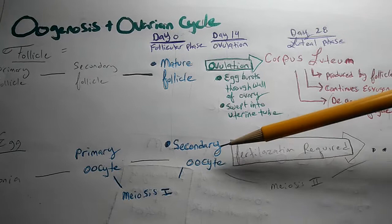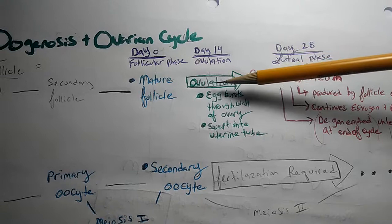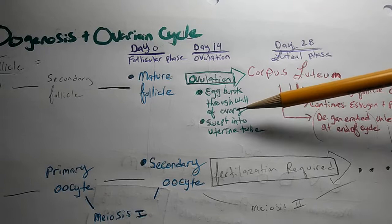Day 14 is ovulation. We have in this green ovulation, we'll have the egg burst through the wall of ovary, and it's swept into the uterine tube. Day 28 includes everything in red.